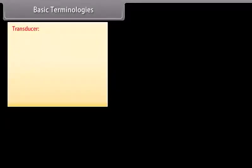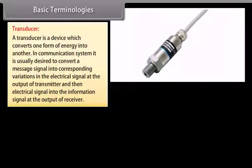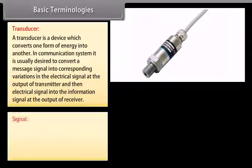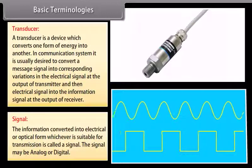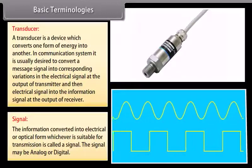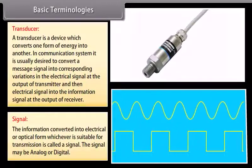A transducer is a device which converts one form of energy into another. In a communication system, it is usually desired to convert a message signal into corresponding variations in the electrical signal at the output of the transmitter, and then the electrical signal into the information signal at the output of the receiver.